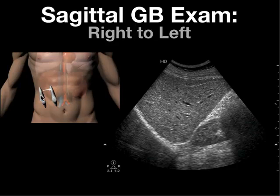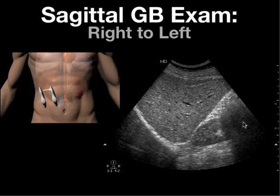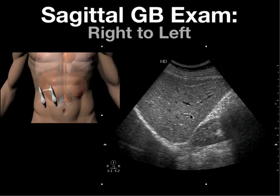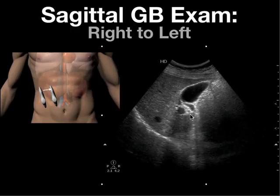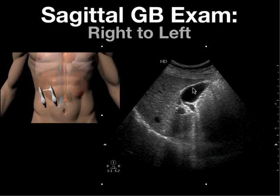Here's an example of the right upper quadrant sagittal window going from lateral to medial. We start off seeing the liver — anterior, posterior, head and foot. Here's the diaphragm, the right pleural space, and the kidney. As we move the transducer medially, we bring the gallbladder into view. Here you can see the fundus of the gallbladder, and here you can see its neck.